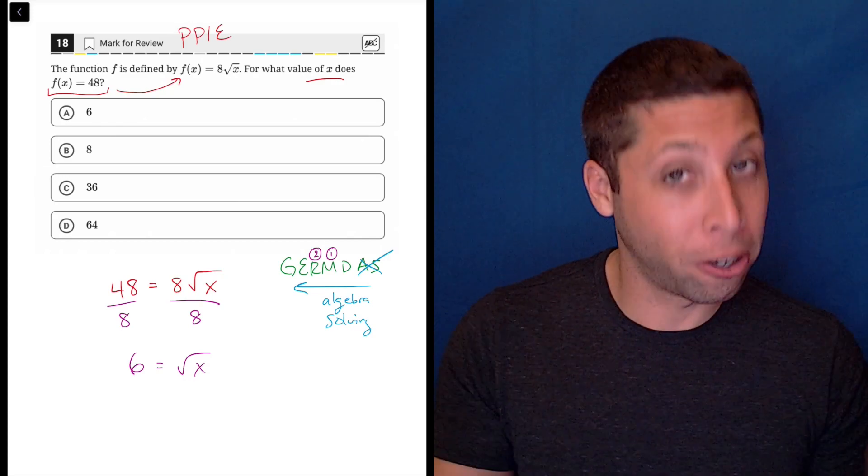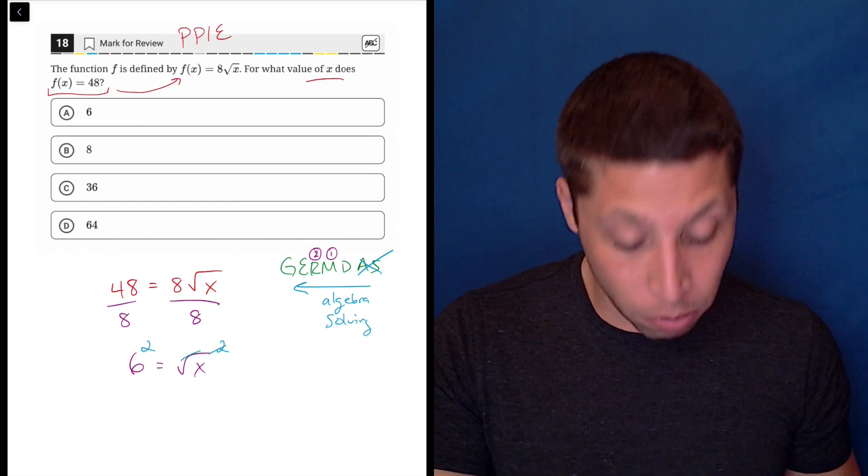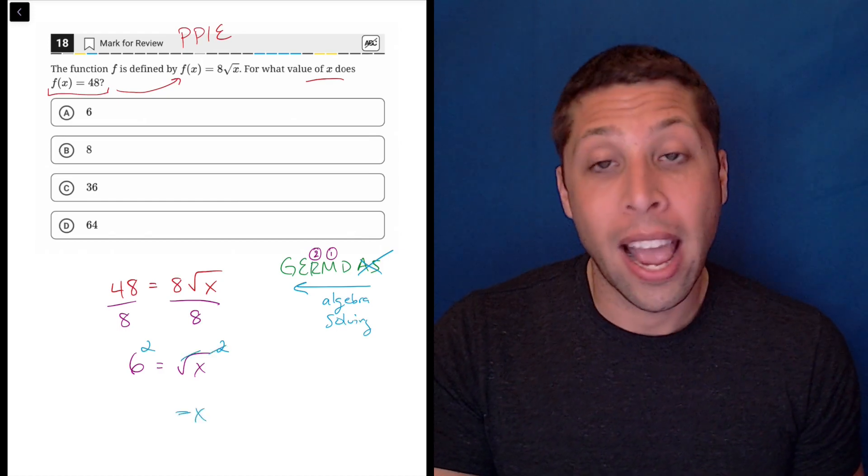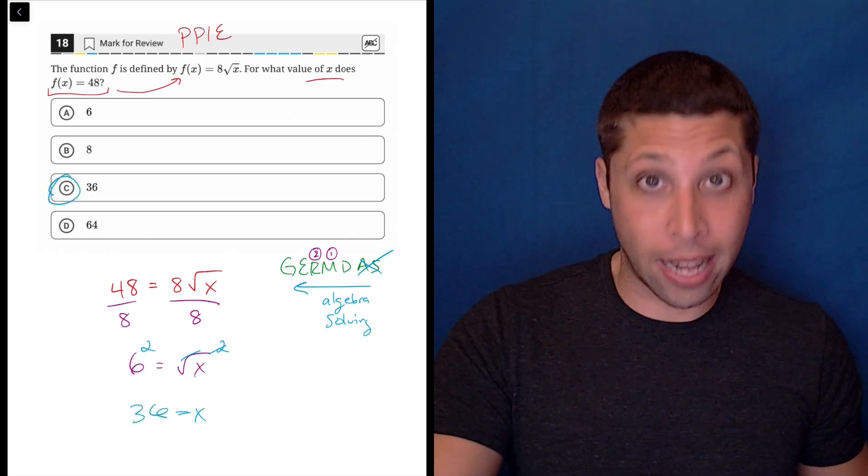That's why with GEMDAS, everything pairs up. So we're going to square both sides. The squaring cancels out the root, leaves us with just a plain old x, and 6 squared is 36. So that is choice C. And that is the answer.